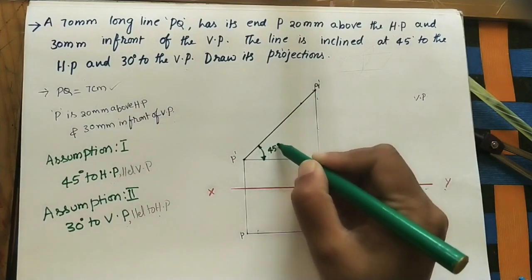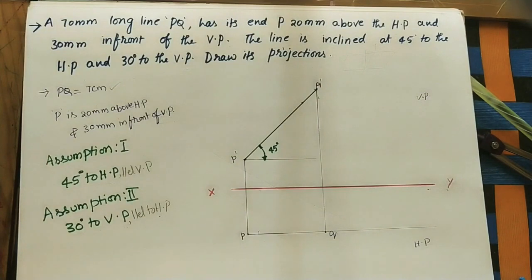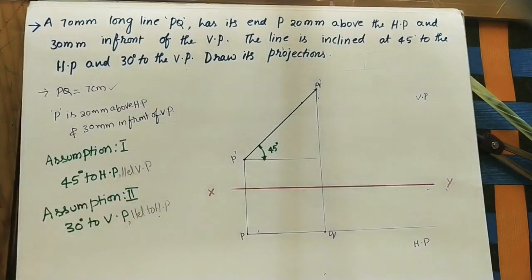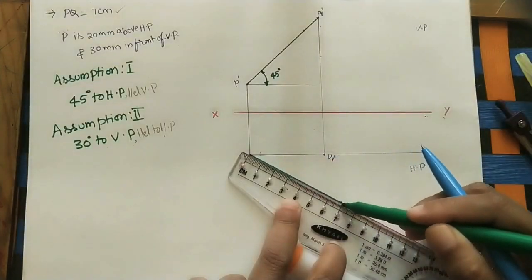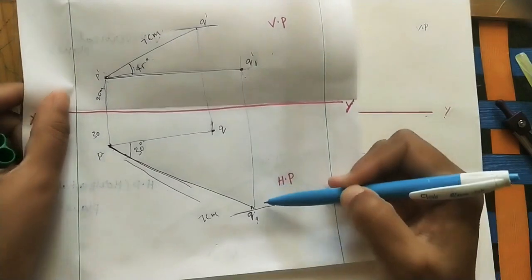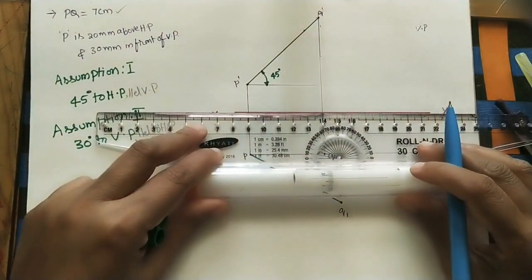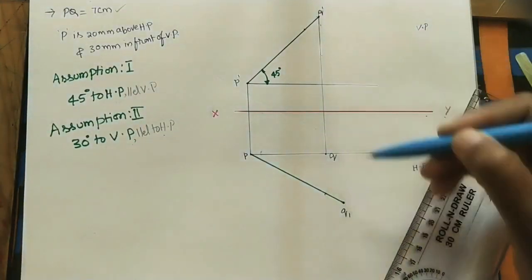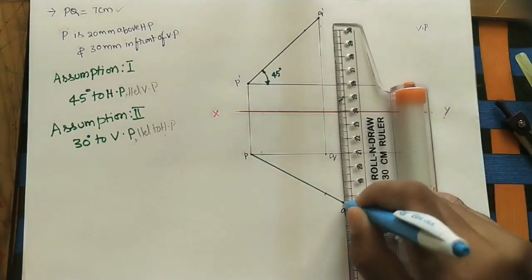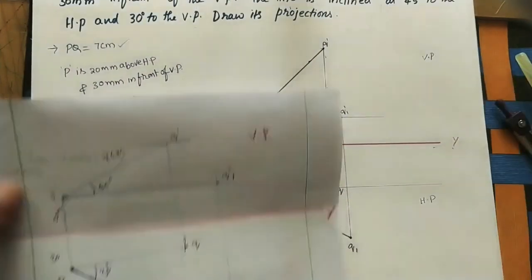This is the first assumption at 45 degrees. For the second assumption, at p take 30 degrees and draw a line of 7 cm — mark this point q1. Draw a projector line from q1 up to the p' horizontal reference line, then draw a projector line at q1 to get q1' in the front view.